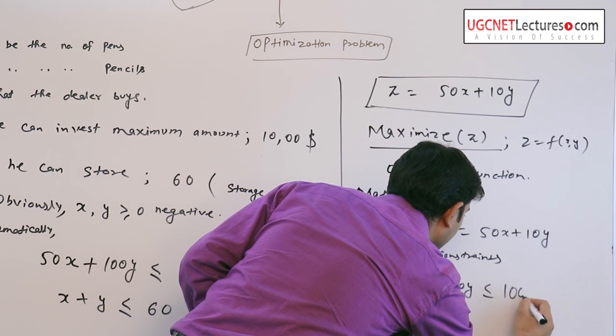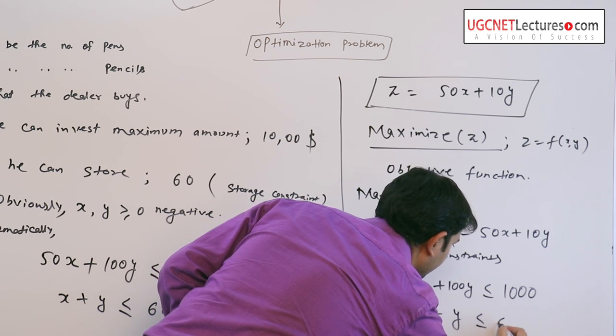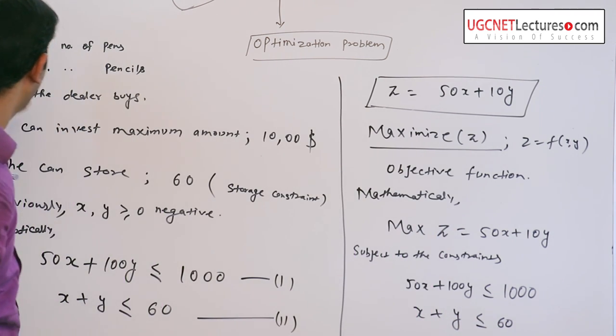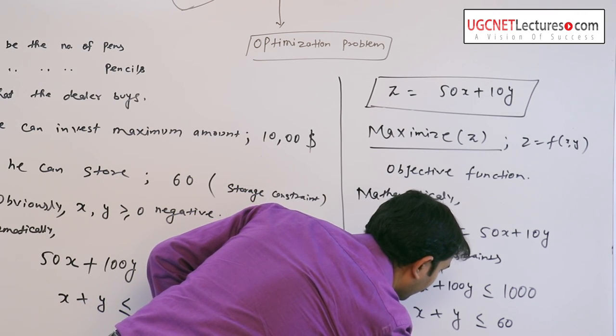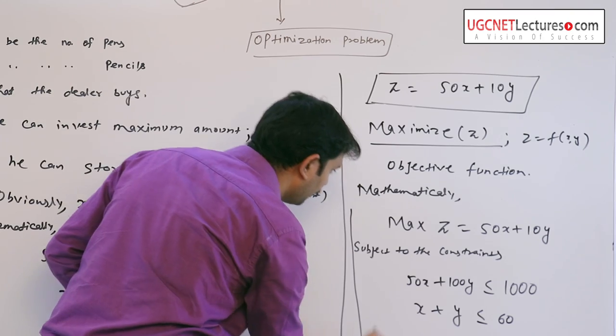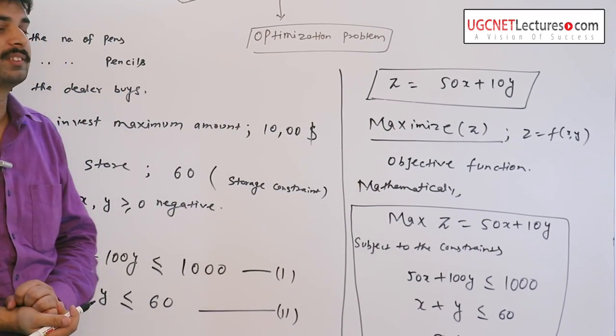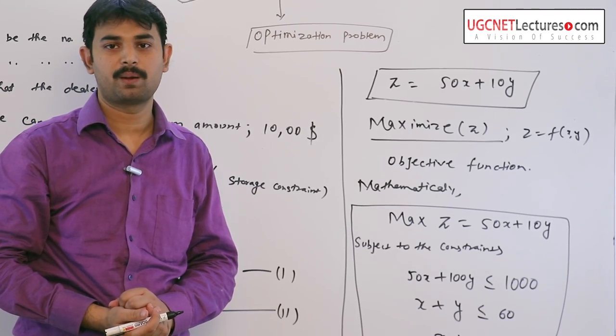The second one is x + y ≤ 60, and also x and y are non-negative. So the problem which is stated here is known as a linear programming problem.